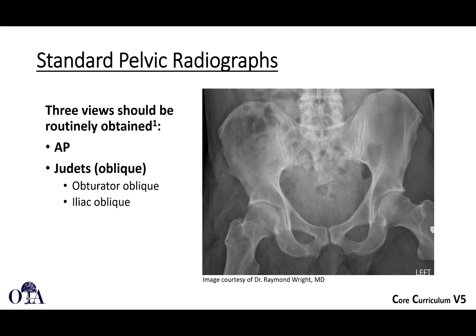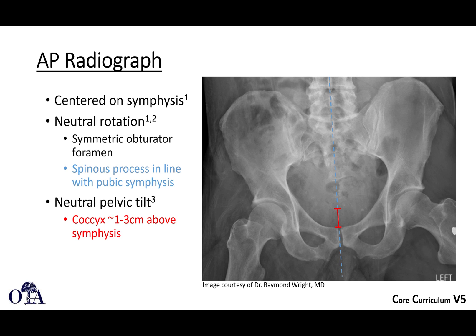Standard radiographic evaluation is typically an AP radiograph of the pelvis and then Judet views. On the standard AP, a good AP should be centered on the symphysis. You can draw a line down the spinous processes of the lower lumbar spine and if you drop that straight down it should intersect through the pubic symphysis. There should be neutral pelvic tilt, with the coccyx about one to three centimeters above the symphysis, and you want the obturator foramen to be roughly symmetric.